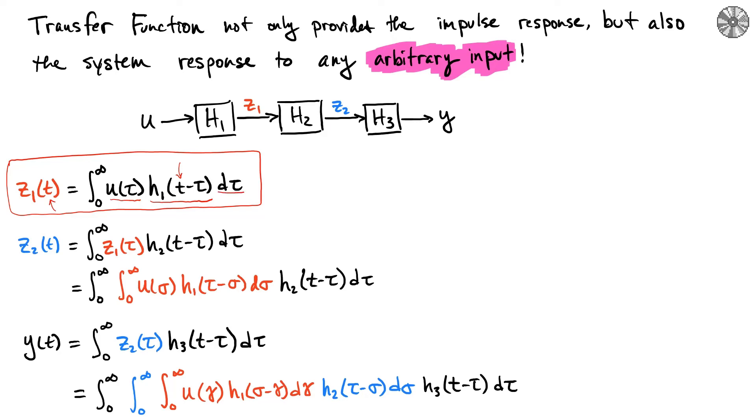We've just done this for a single block. We can express z1 in terms of u and then continue that chain by nesting these convolution statements. Now we can write z2 in terms of z1 and y in terms of z2, which ends up being a very nasty nested set of integrals. We said z2 can be interpreted as the convolution of transfer function h2 with input signal z1, and then I plug in what z1(tau) is.